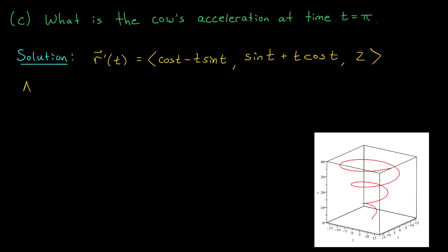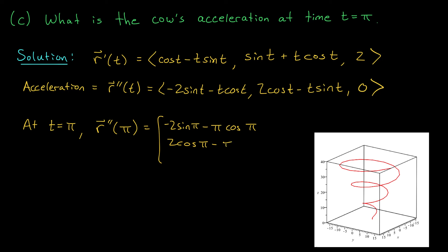But I'll let you check for yourself that our acceleration vector is given by r double prime t, and it has entries minus 2 sine t minus t cos t, 2 cos t minus t sine t, and 0 for the z component. Now, we are interested specifically in the acceleration at time t equals pi. So, by plugging in pi for t, I get an acceleration vector r double prime pi, which is minus 2 sine pi minus pi cos pi, 2 cos pi minus pi sine pi, and 0.